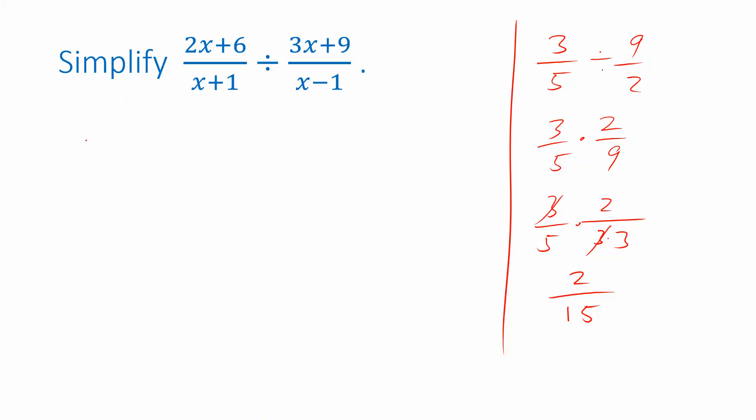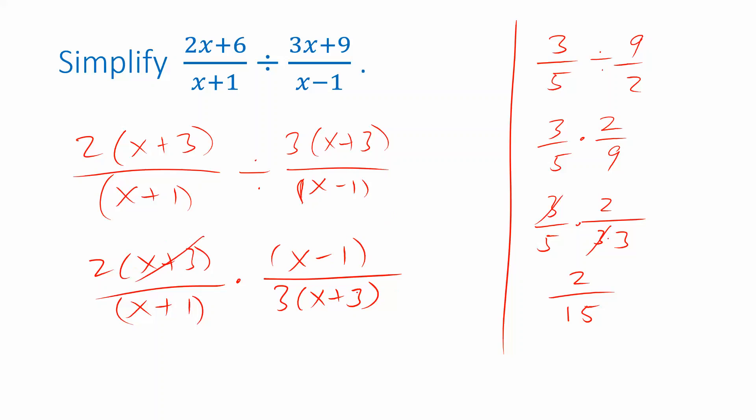So start by factoring. I have a 2 I can pull out of 2x plus 6, leaving x plus 3 behind. And I have 3 times x plus 9, I can factor out a 3. Now I can change my division into multiplication by a reciprocal. So the reciprocal, that's what you get when you flip the fraction. So this x minus 1 ends up in the numerator. 3x plus 3 ends up in the denominator. And now I can see I have an x plus 3 factor in the numerator that will cancel with the same factor in the denominator.